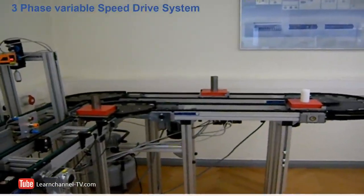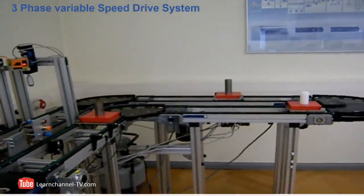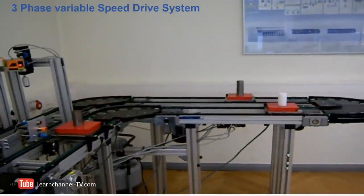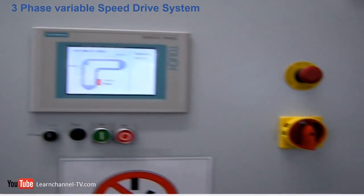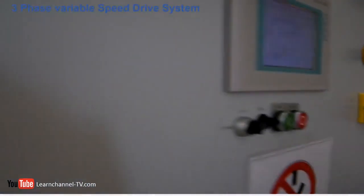The conveyor belt is driven by three-phase AC motors. How is it possible that this line can start and stop so smoothly? Let's have a look at the control. It's all because of the frequency inverter.